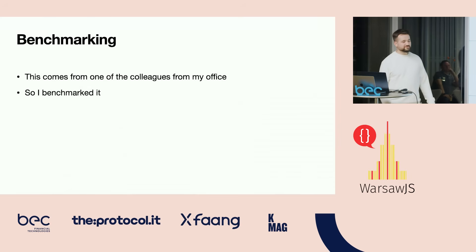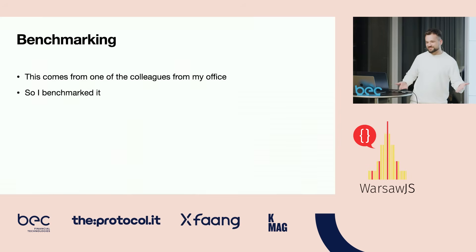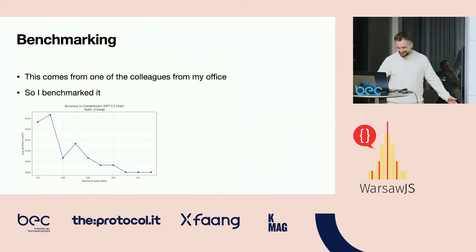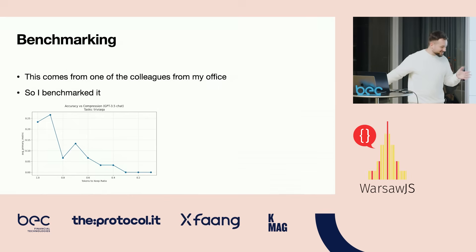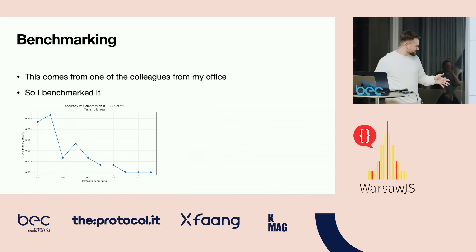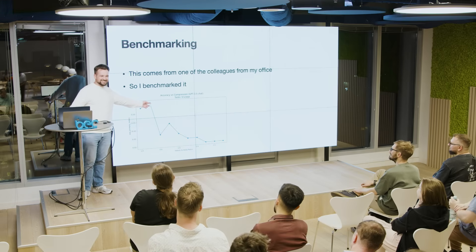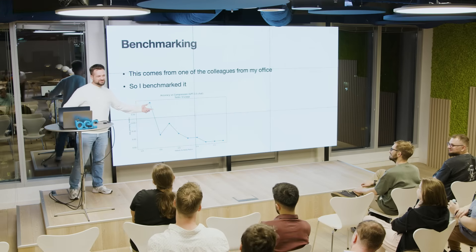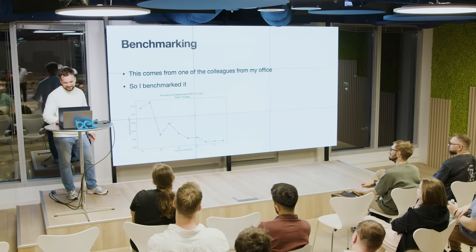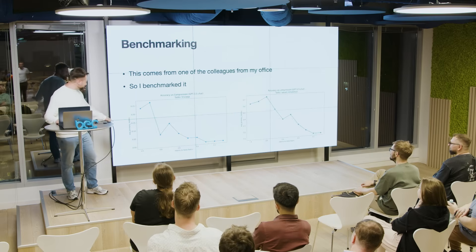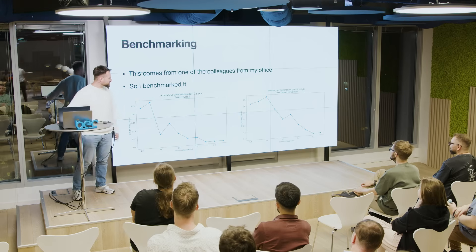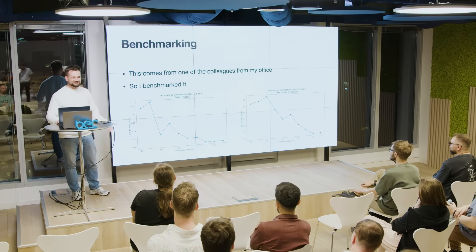One of my colleagues from the office told me, why don't you benchmark it? If it makes sense, it should produce some numbers, right? So it did. I have no idea why these charts look the way they do — I didn't investigate them too deep. But it actually seems to kind of make sense. Why is it better when you remove like 10% of tokens? Maybe there are people that understand science. Here, if you remove like 20% of tokens in this benchmark, it's even better than with all the tokens.